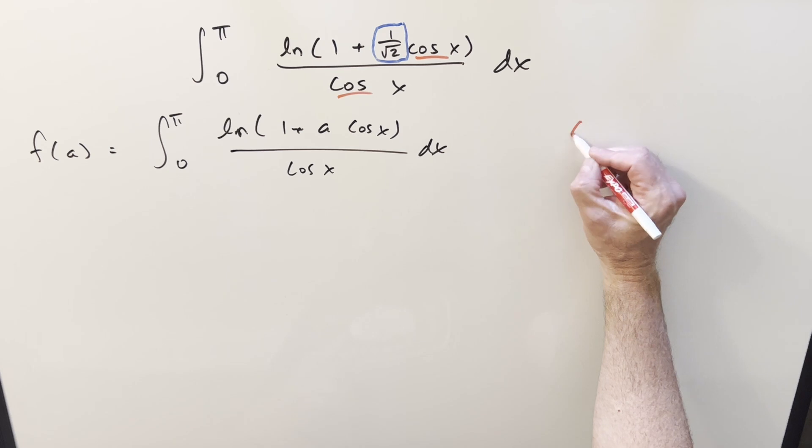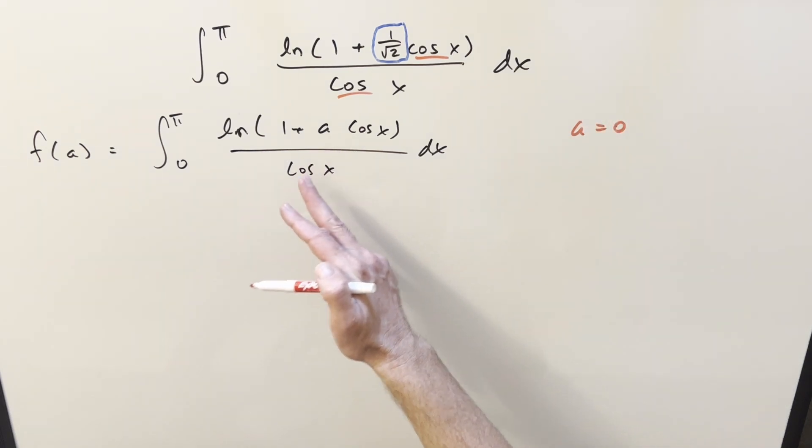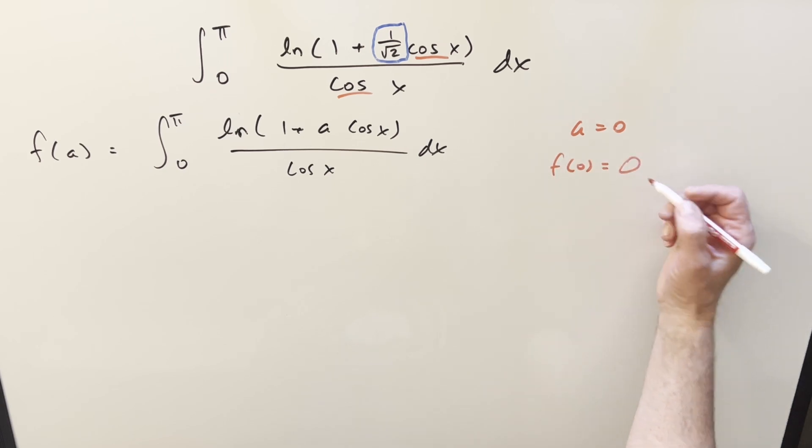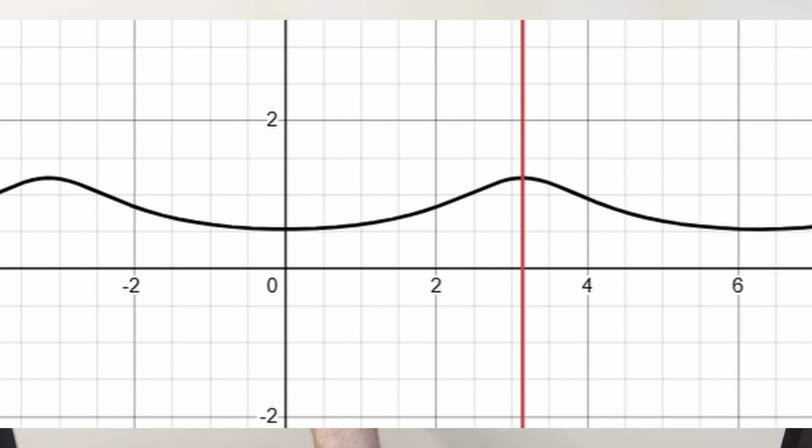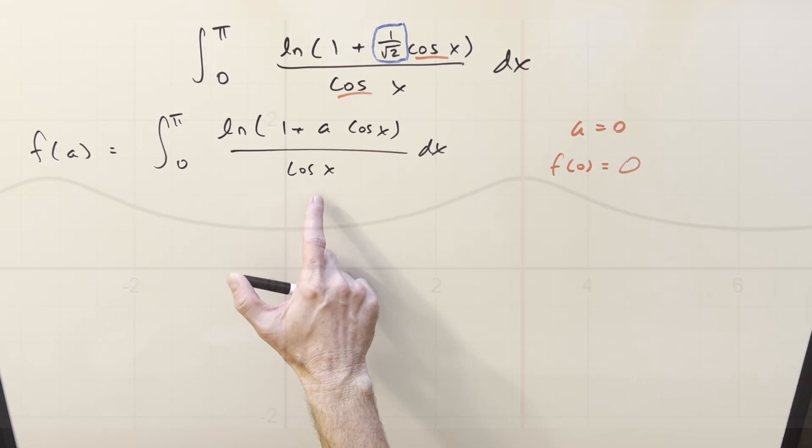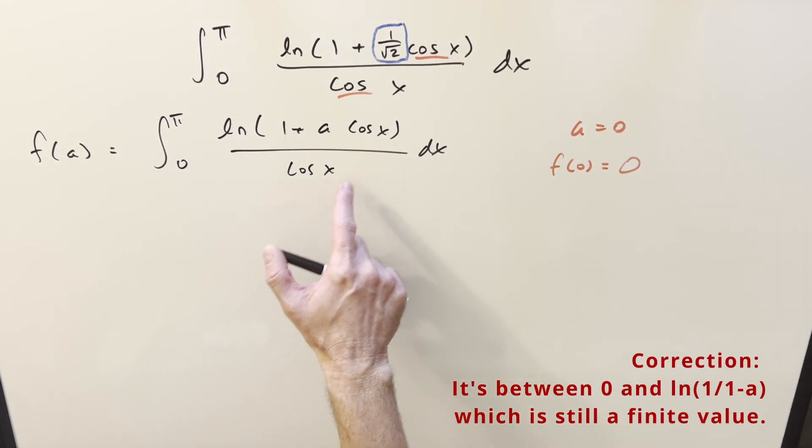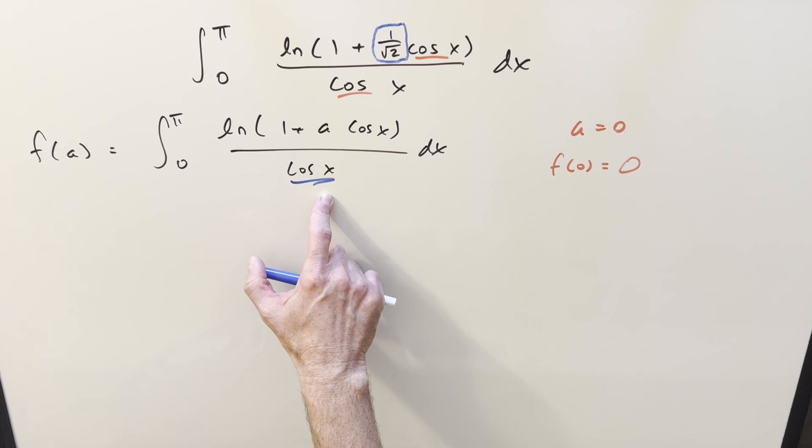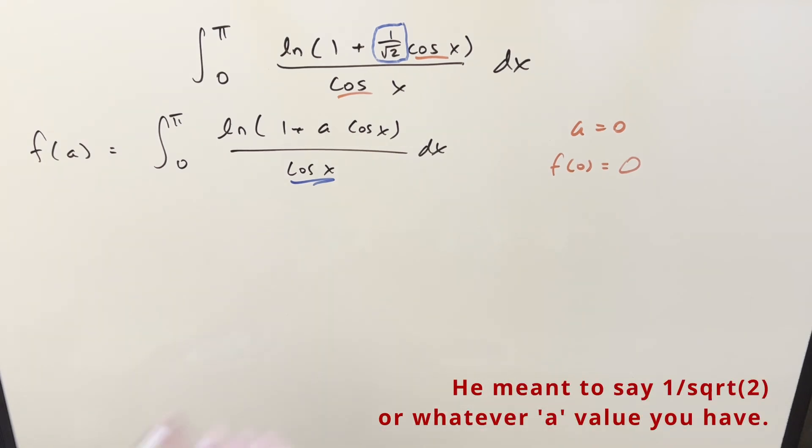One thing that's going to be nice about this is if you notice when a is zero, you just have natural log of one in the numerator. So that means our f of zero value is just going to be zero. And before I differentiate it, there's not much problem with the convergence on this. The whole thing is going to be between zero and one. One point that seems to be a problem is when x is pi over two, you'll notice cosine of pi over two is zero. But it turns out the limit of the whole thing at pi over two is actually one half. So there's really not going to be any problems with the convergence of this thing between zero and pi.